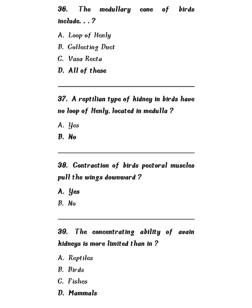Question 37: A reptilian type of kidney in birds has no loop of Henle located in the medulla — yes or no? The answer is no. Question 38: Contraction of birds' pectoral muscles pulls the wings downward — is it correct or no? The correct answer is yes. Contraction of birds' pectoral muscles pulls the wings downward.